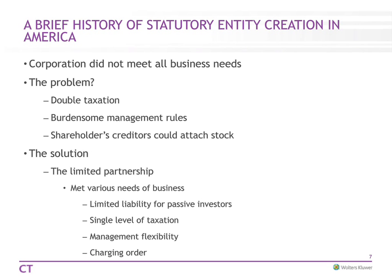However, the corporation didn't meet every business need. One of the problems was double taxation — the corporation is taxed on its income, and then any income distributed to stockholders is taxed as well. There are also burdensome management requirements, and shareholders' creditors have the right to attach stock. If you have a small corporation, a judgment creditor can attach the stock of someone who is in debt to them, and then vote to liquidate the corporation using that shareholder's share to pay off the debt.